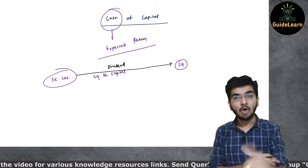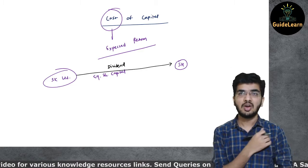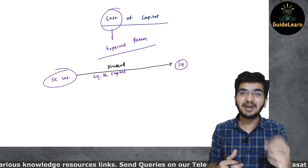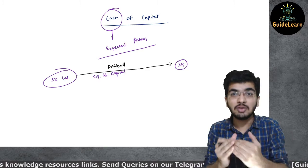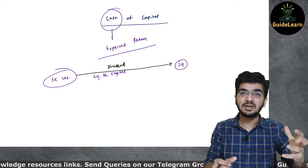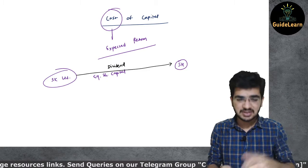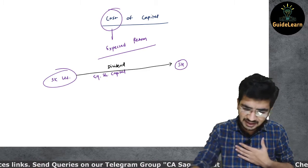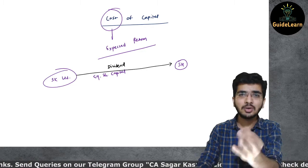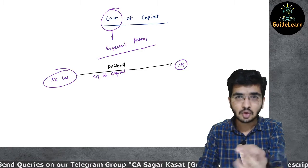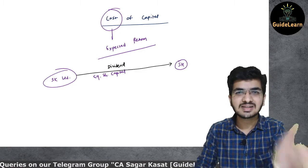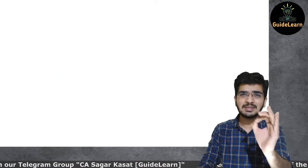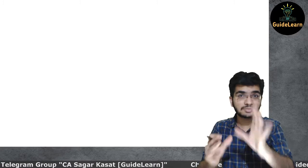So how much should the shareholder expect, and why? The expected return should match what the company is actually delivering. If I am a shareholder, I will expect that I should get at least a return that compensates for the risk I am taking by investing in that company. Let me give a simple example as we move into the second part of this video.